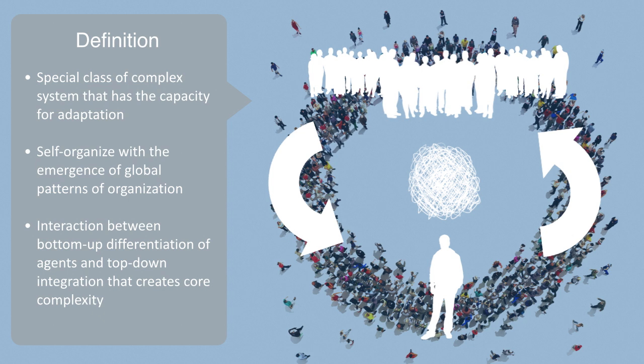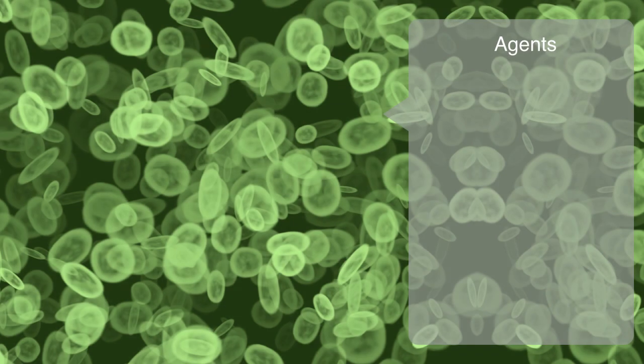This is a lot of very dense information, so we will now try to flesh it out in greater detail through examples. There are many examples of complex adaptive systems, from ant colonies to financial markets to the human immune system to democracies and all types of ecosystems, but we will start on the micro level by talking about the agents and adaptation.